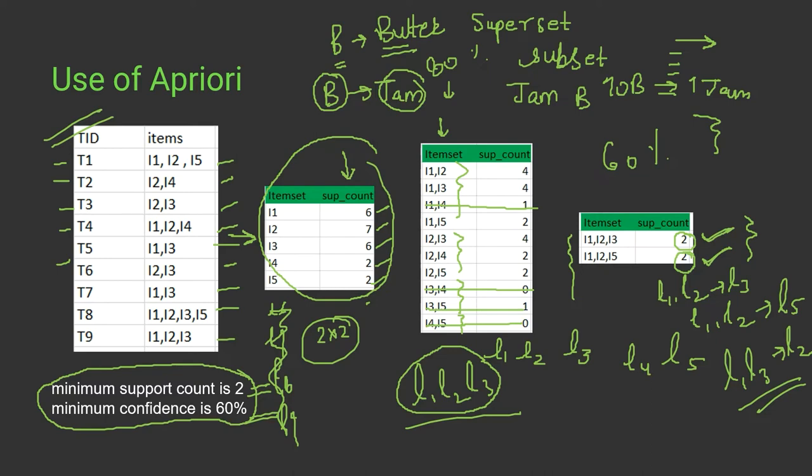This is how strategies are planned in supermarkets to increase sales by finding out the patterns and behavior of customers. We find out the association or the correlation between two items and predict customer behavior — if a person is buying one item, we can say with a certain percentage probability that they will also buy another product.